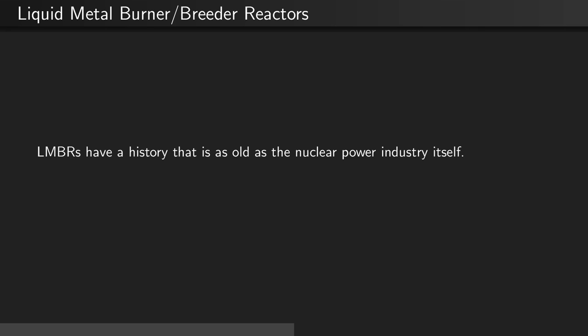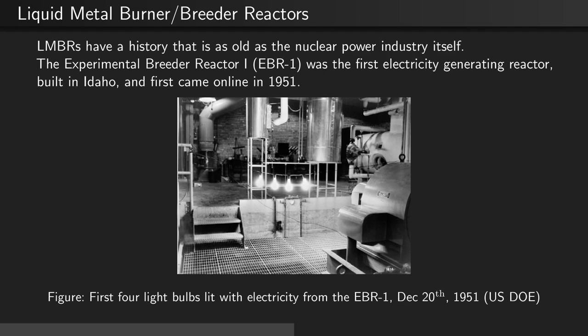LMBRs have a history that is as old as the nuclear power industry itself. The experimental Breeder Reactor 1, or EBR-1, was the first electricity-generating reactor, built in Idaho, and first came online in late 1951. We can see the picture of the first four electric light bulbs lit by the EBR-1 on December 20, 1951, in this image.